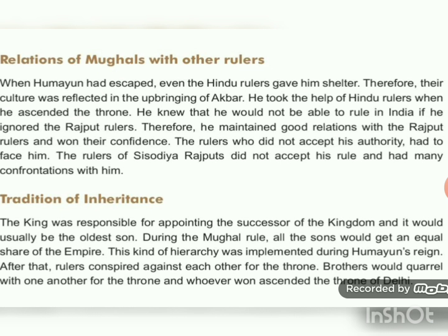Regarding the tradition of inheritance: the king was responsible for appointing the successor of the kingdom, and it would usually be the oldest son. During the Mughal rule, all the sons would get an equal share of the empire. This system was implemented during Humayun's reign. After that, rulers conspired against each other for the throne — brothers would quarrel with one another, and whoever won ascended the throne of Delhi.